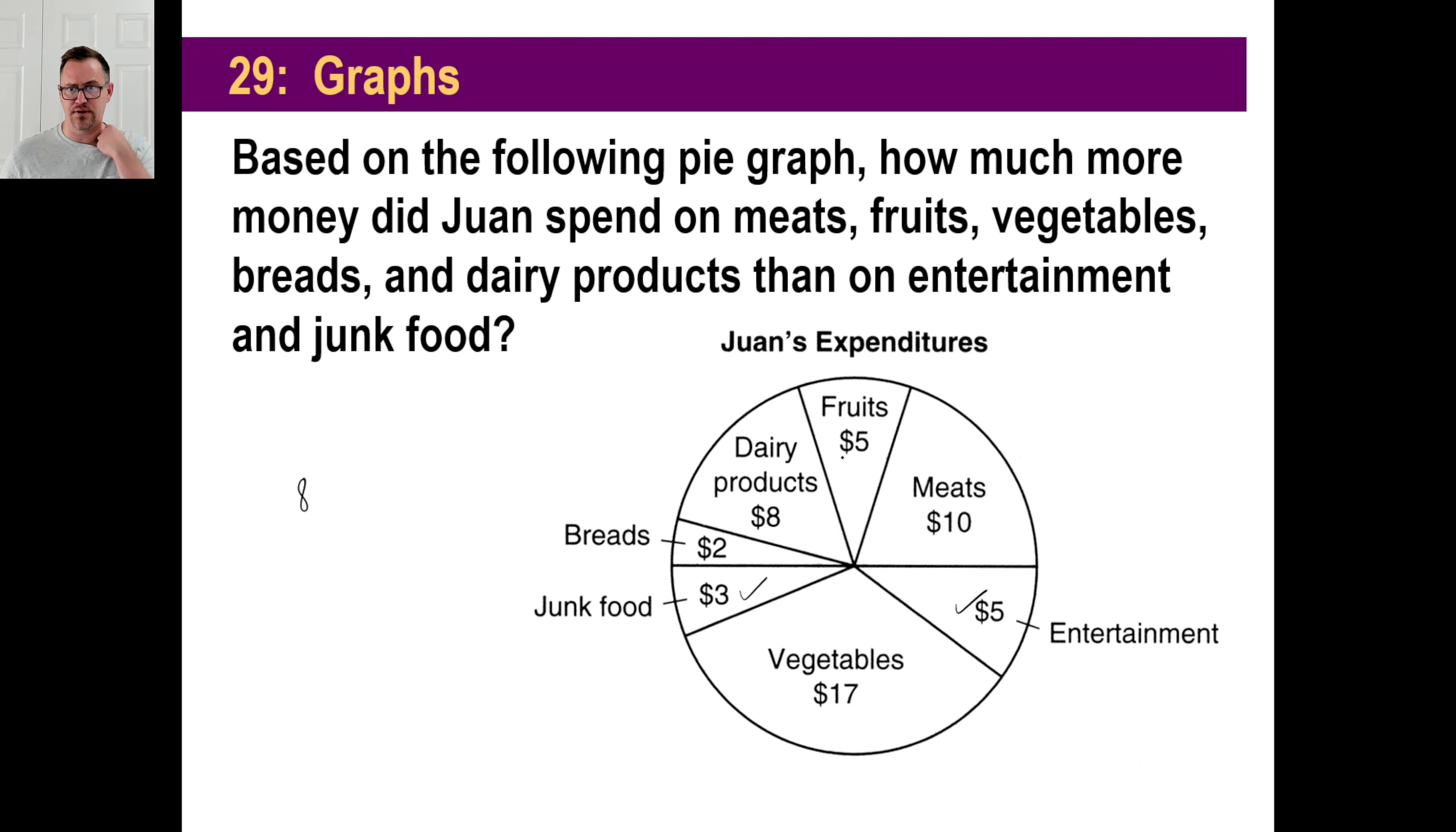So meats, fruits, veggies, breads, and dairy. Meats, 10. Fruits, five. Vegetables is 17. Bread is two. And dairy products, eight. Must not be a homeschooler. All this dairy stuff. Where's gluten in here? Raw gluten, nice tasty spoonfuls of that. So 15, 17, 32, that's going to be 42 total. So he spent 42 there, and he spent $34. That's how he figured it out.